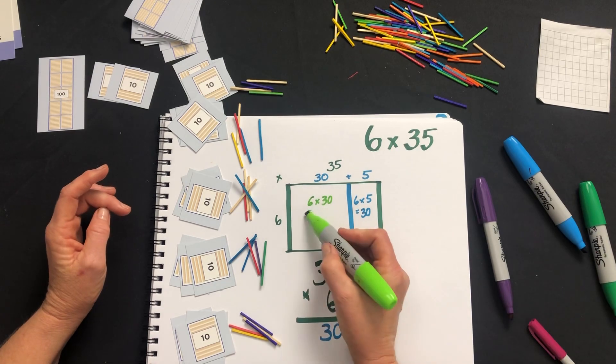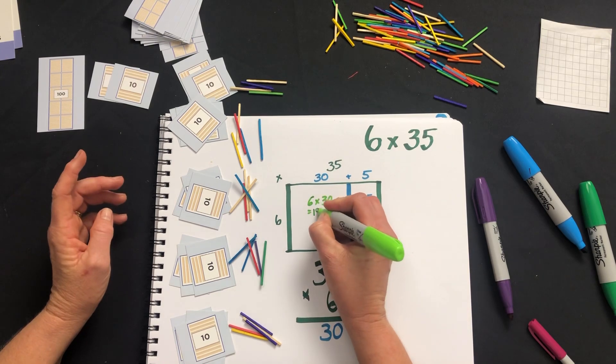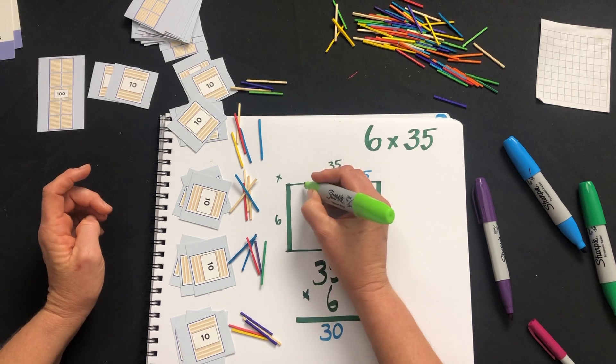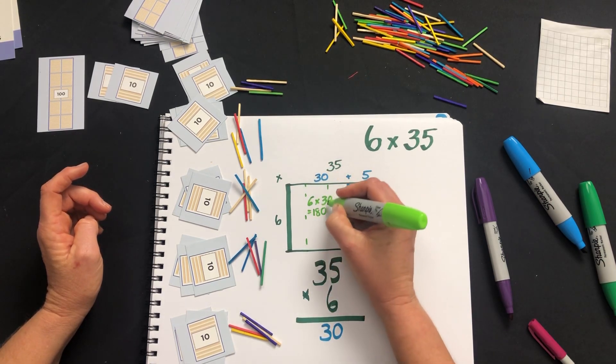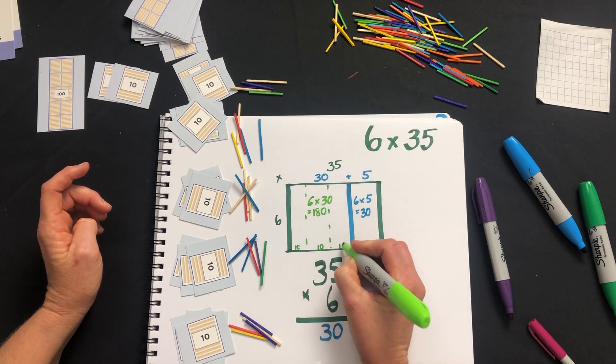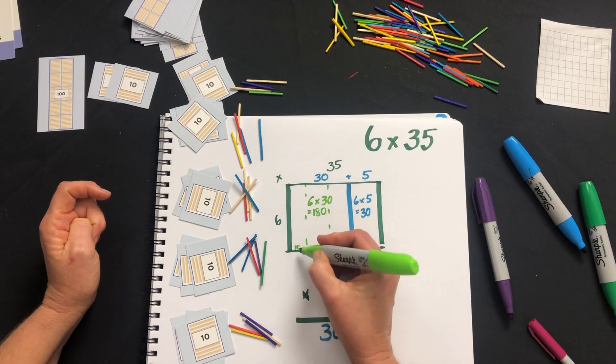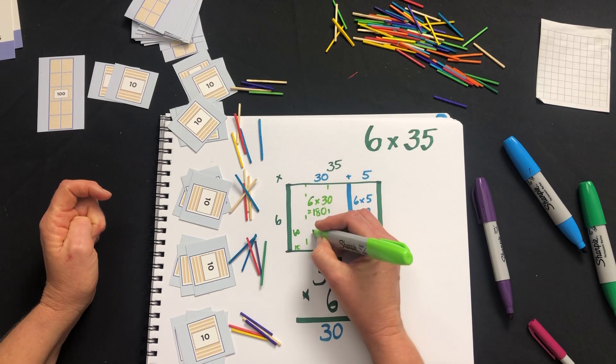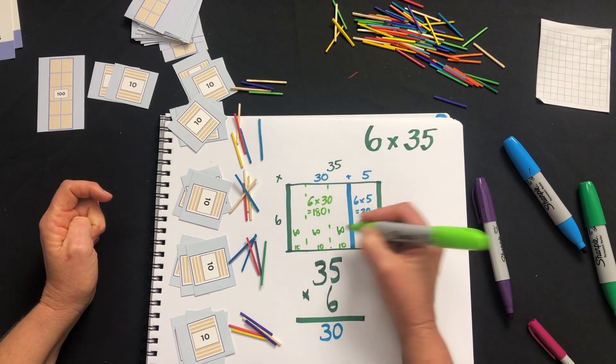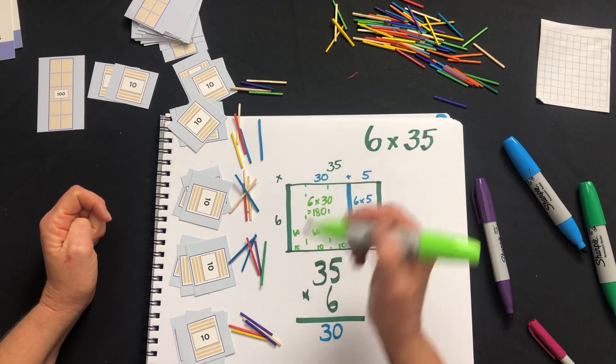Then we've got 6 times 30. Now 6 times 30 is 180, but if your child's having trouble with that, what you can do is partition this even further. So we've made each of these ten long instead of a total of 30. So you can say well, 6 times 10 is 60, 60, and 60, so we're getting our 180 as we build up their understanding.